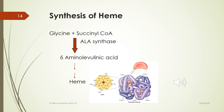Glycine is a precursor for the synthesis of heme. In the presence of the enzyme ALA synthase (delta-aminolevulinic acid synthase), glycine condenses with succinyl-CoA to form delta-aminolevulinic acid, which is the first step in heme synthesis. ALA synthase is the key regulatory enzyme of heme synthesis.